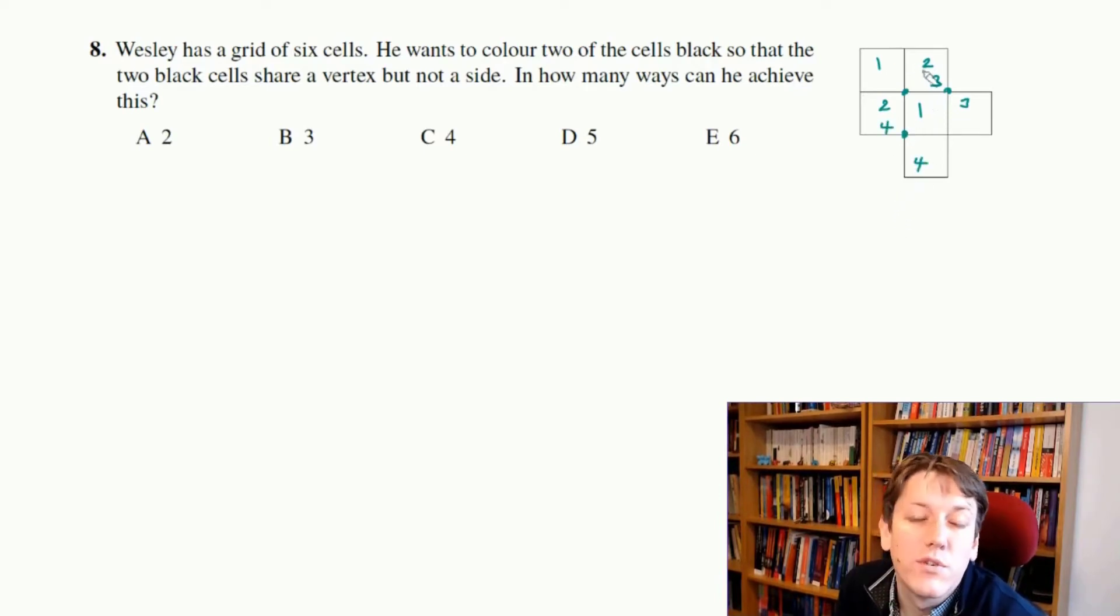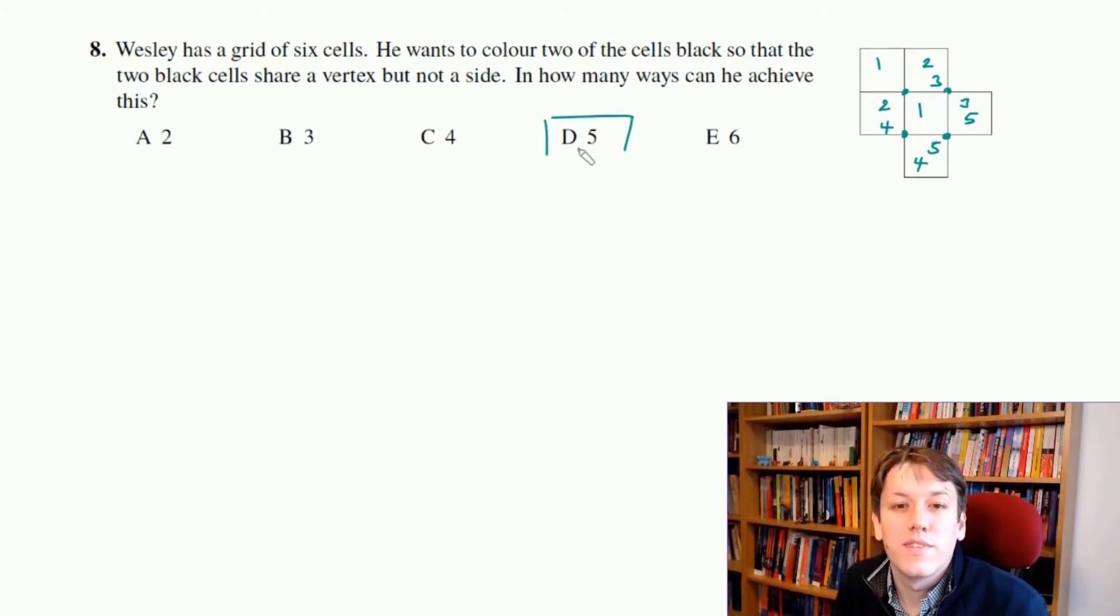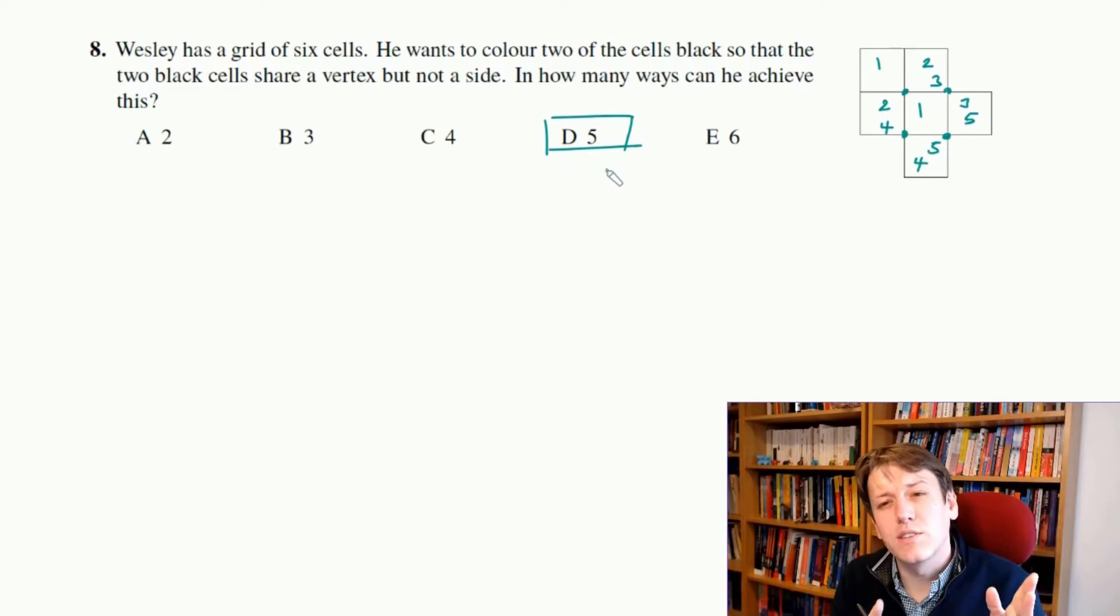But there's nothing else apart from the one we've already looked at. And then if I look at this middle square, well, that can go with the one it's already gone with, but everything else it shares a side with. So there's no more options there. And then this final one here could also go with this one. And then we can see we've exhausted all of the possibilities. And so the answer is D, 5. Notice how doing it systematically by starting at the top and working down in order there, I'm really confident that I've got them all, and that there aren't any more.